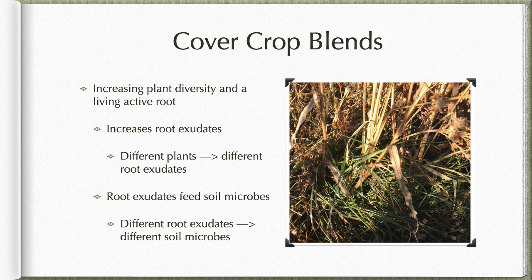Increasing plant diversity and having an active root — the reason we want that is, number one, we're going to have better soil armor on the soil surface. But we're also increasing the amount of root exudates released into that soil. Different plants have different root exudates, and when those different root exudates hit the soil, they feed different soil microbes. They trigger these things to get activated in our soil to work for us. Having that living root and that plant diversity is key to building soil health.